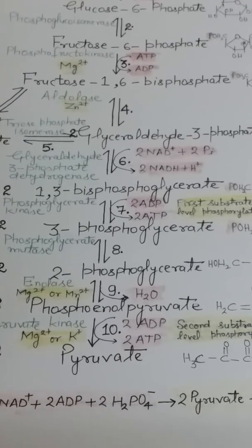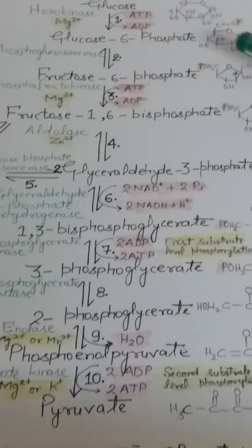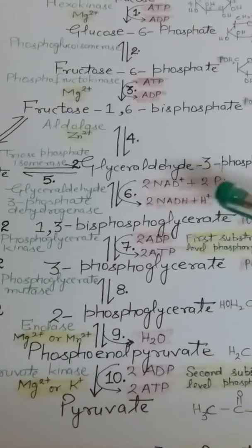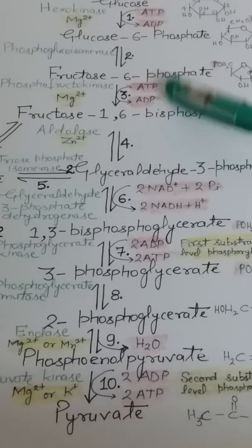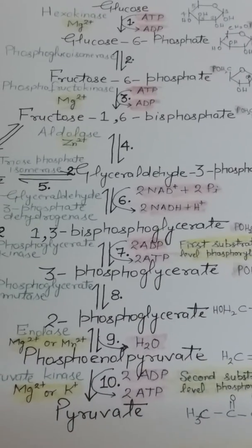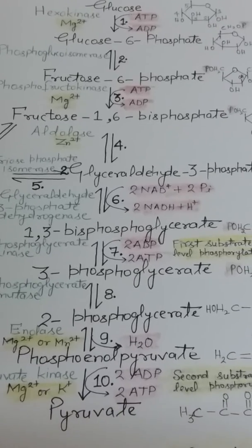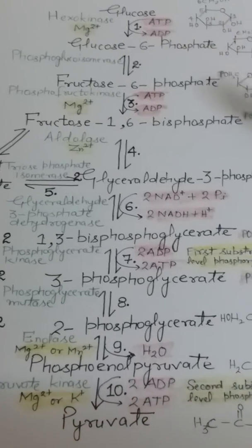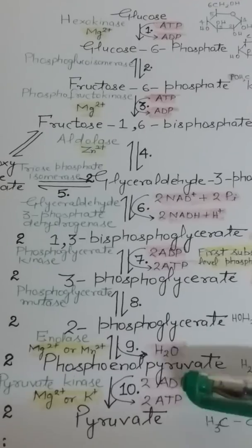Three glycolytic reactions are irreversible. These reactions are catalyzed by the enzymes hexokinase, phosphofructokinase, and pyruvate kinase.